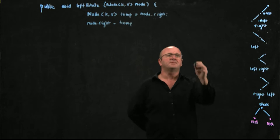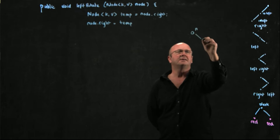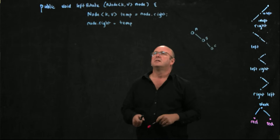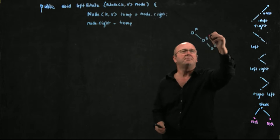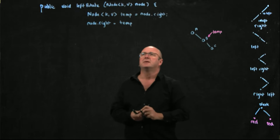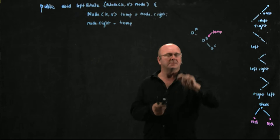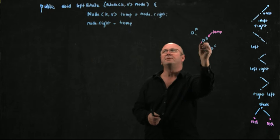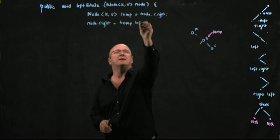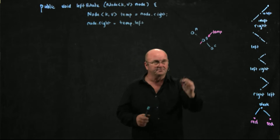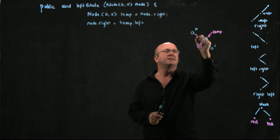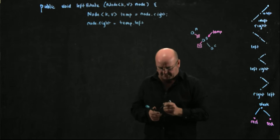So we're doing a left rotation, starting with a situation like this: here's A, here's B, and here's C. What we've done is set a temporary pointer to B, and then we've set A's right child — node dot right — to temp dot left, which is B's left child. B's left child is down here — it's an X — and so now we've set our temporary pointer there.